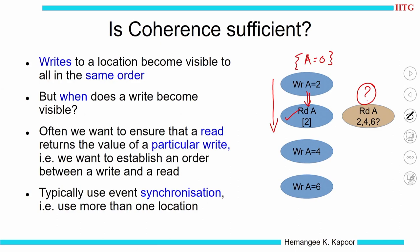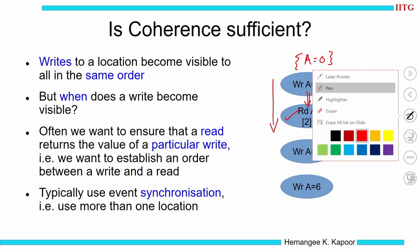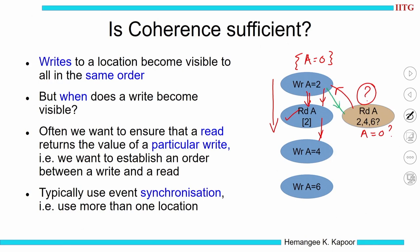But if I ask what value this read will get — will it be 2? Maybe. Suppose initially a was equal to 0. If the brown read happened first and then the write happened, you would say a is 0. But if write a equal to 2 happened first, then my value of a will be 2. There could be further interleavings: if I come up to write a equal to 4, then do that read, my value of a will be 4.